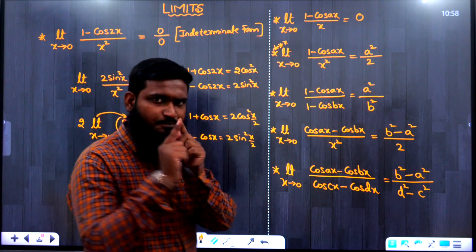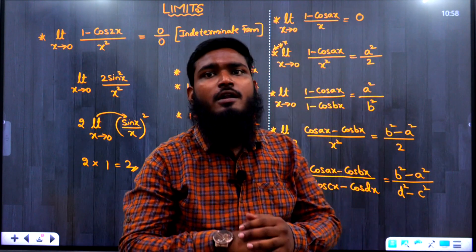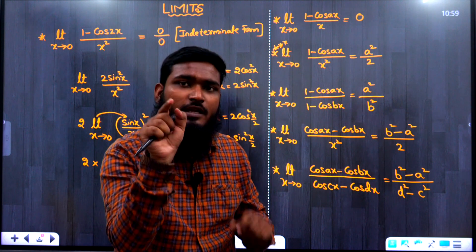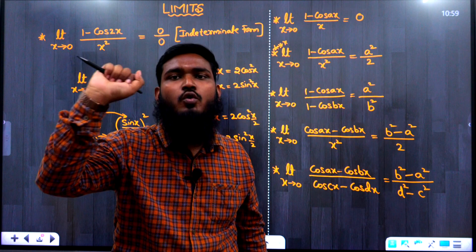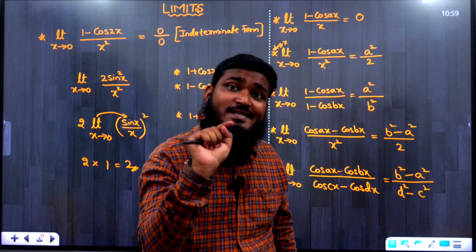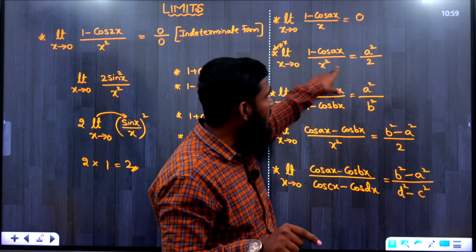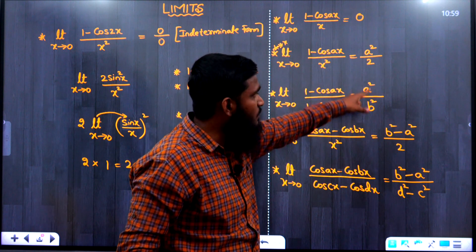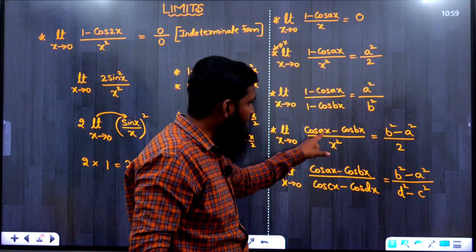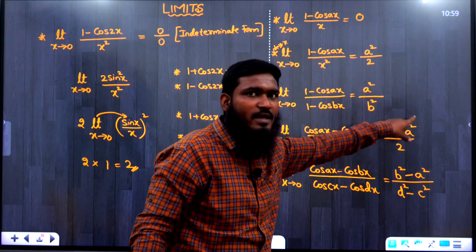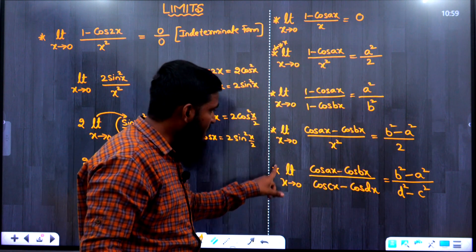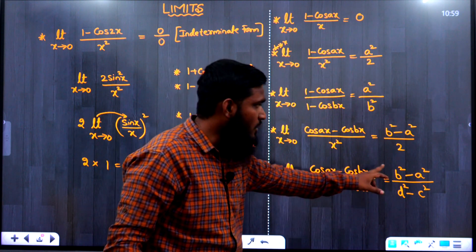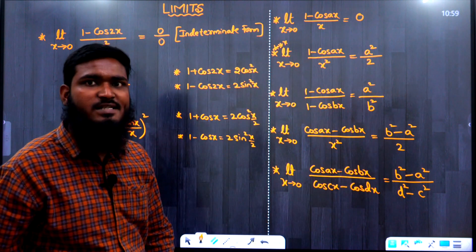Let us revise all formulas quickly. (1) limit x→0 of (1 − cos ax)/x = 0. (2) limit x→0 of (1 − cos ax)/x² = a²/2. (3) limit x→0 of (1 − cos ax)/(1 − cos bx) = a²/b². (4) limit x→0 of (cos ax − cos bx)/x² = (b² − a²)/2. (5) limit x→0 of (cos ax − cos bx)/(cos cx − cos dx) = (b² − a²)/(d² − c²).